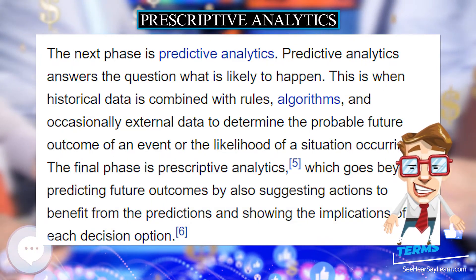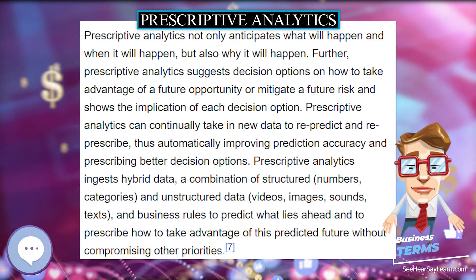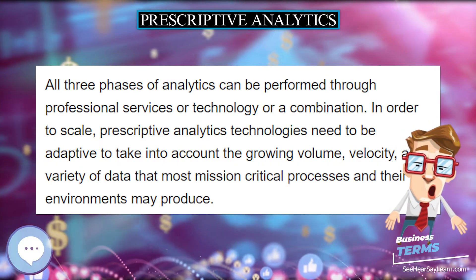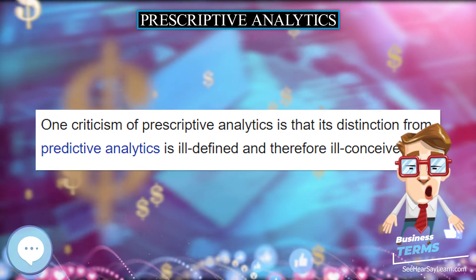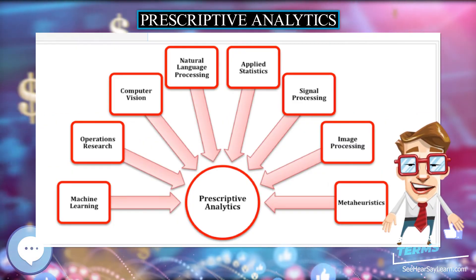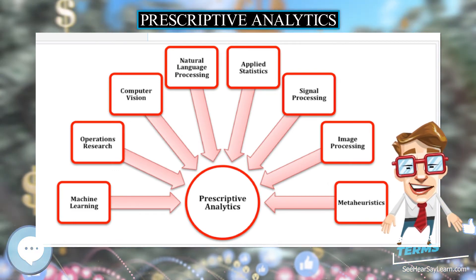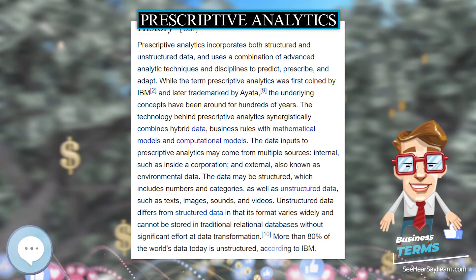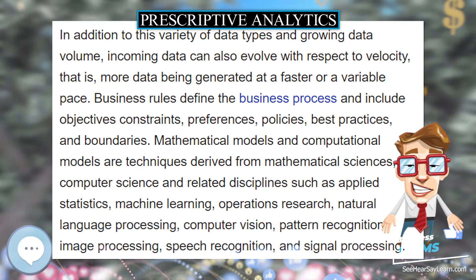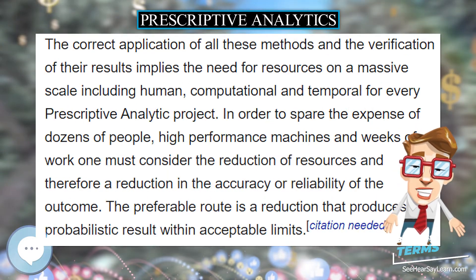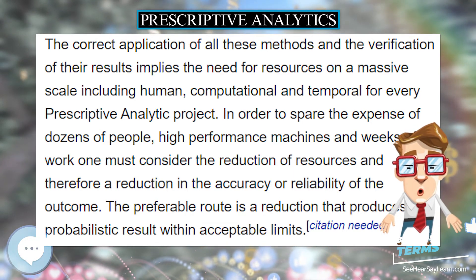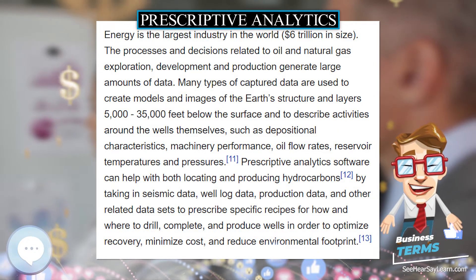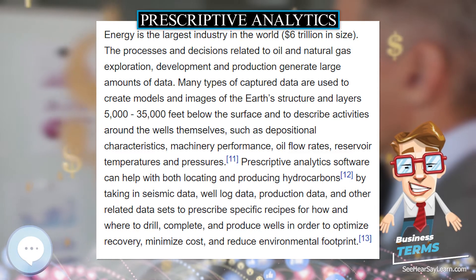In the realm of oil field equipment maintenance, prescriptive analytics can optimize configuration, anticipate and prevent unplanned downtime, optimize field scheduling, and improve maintenance planning. According to General Electric, there are more than 130,000 electric submersible pumps (ESPs) installed globally, accounting for 60% of the world's oil production. Prescriptive analytics has been deployed to predict when and why an ESP will fail, and recommend the necessary actions to prevent the failure. In the area of health, safety, and environment, prescriptive analytics can predict and preempt incidents that can lead to reputational and financial loss for oil and gas companies.